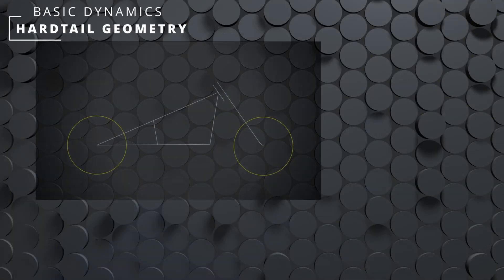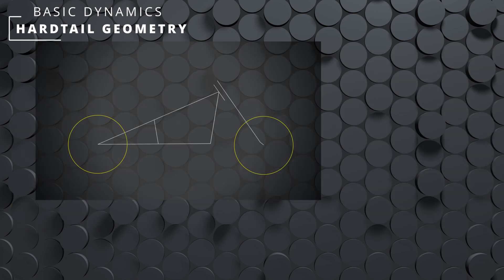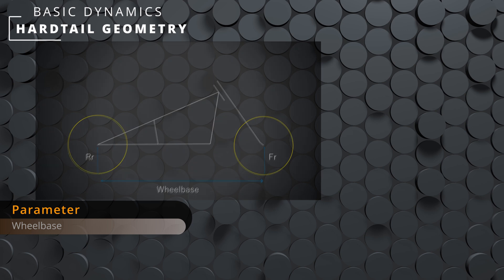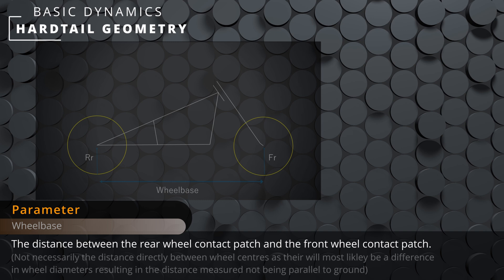We'll start with the most simple frame: the hardtail. A hardtail is a motorcycle with no rear suspension, which makes it really easy to analyse. You'll usually find all of these parameters on the website in the chassis or dimension specifications. Let's first consider the wheelbase. This is the most simple to understand by name — it is simply the distance between the base of the wheels. We take this measurement from the centre of the front and rear wheel contact patches, not the direct line between the wheel axles. That is because we also take note of the rear and front wheel radius, and if the wheels are not the same diameter — which they rarely are — then this line will not be parallel to the ground and it won't be an accurate measure.